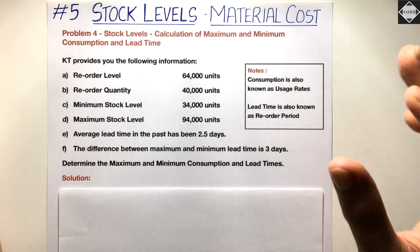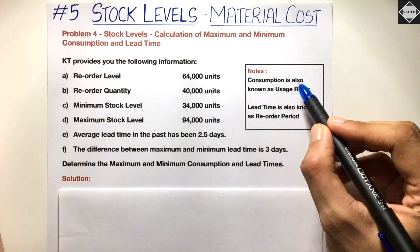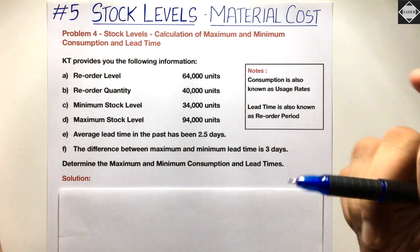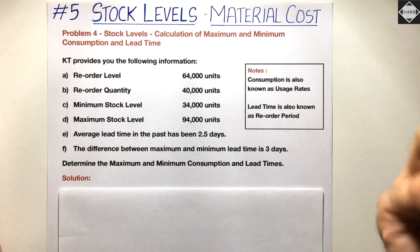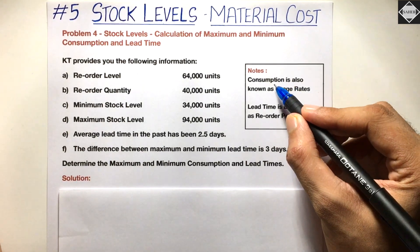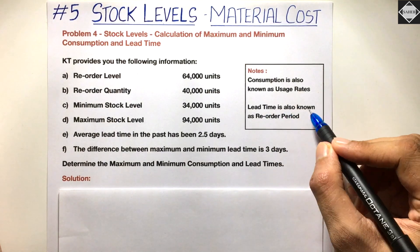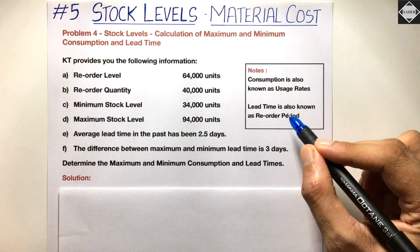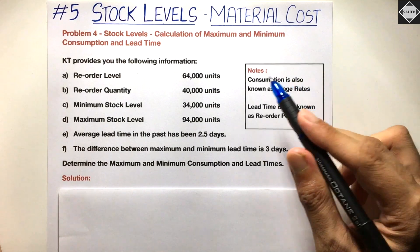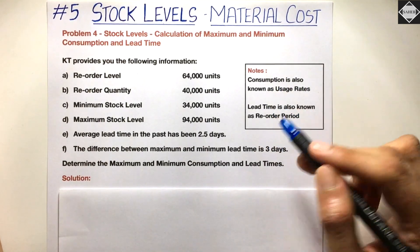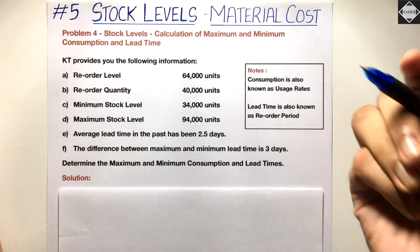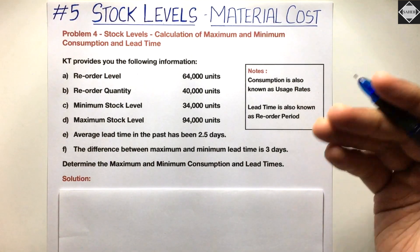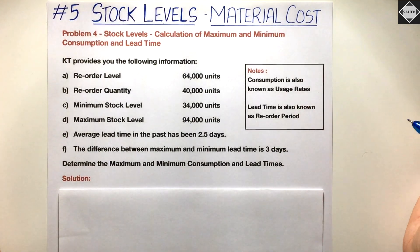Remember that consumption is also known as usage rates — if the question says 'calculate usage,' they are talking about consumption. Lead time is also known as reorder period or delivery period. You have to be clear with all these terms so that if you get a slightly twisted question in the exam, you can easily understand they are just talking about the same thing.